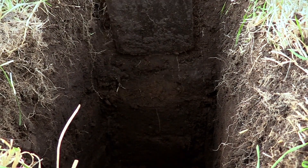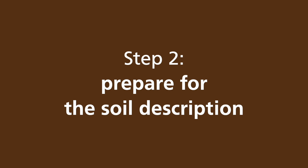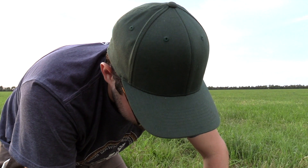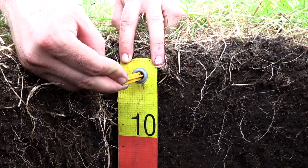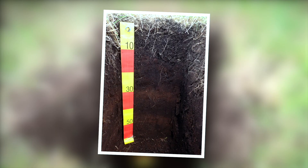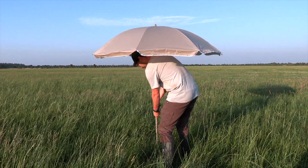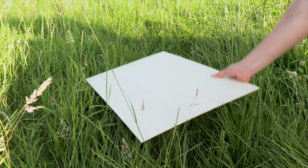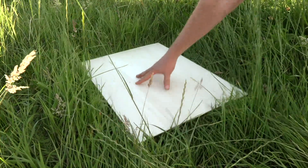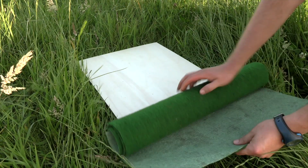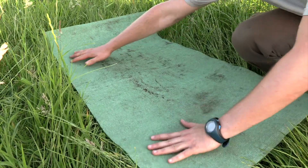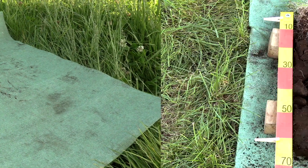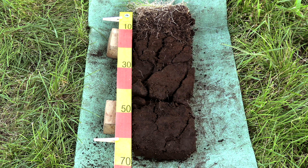Now the preparations for the soil description can begin. A measuring tape is attached to one of the narrow walls that has been cleaned and smooth, with zero on the upper boundary of the soil. The soil profile can now be photographed. If the sun is strong, you can use a parasol to create some shade. Before you continue, it would be beneficial to prepare an even surface where you can lay the monolith. This step is especially important if the vegetation is high or the surface is uneven. You can use a light but solid board and a rollable pad. In this way, the monolith will lay flat and will have a homogeneous background, which is ideal for the photo documentation.